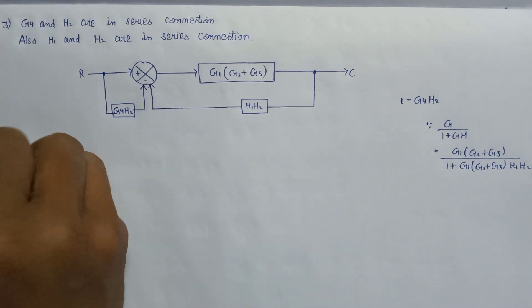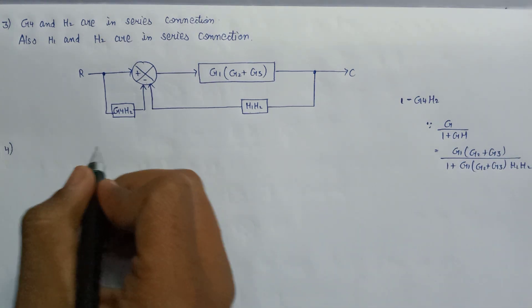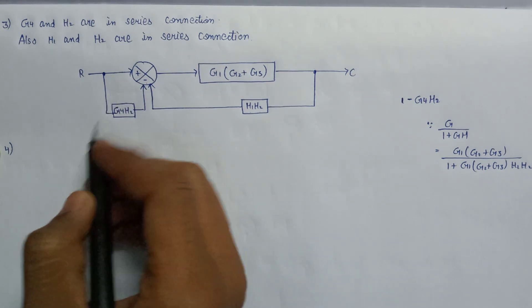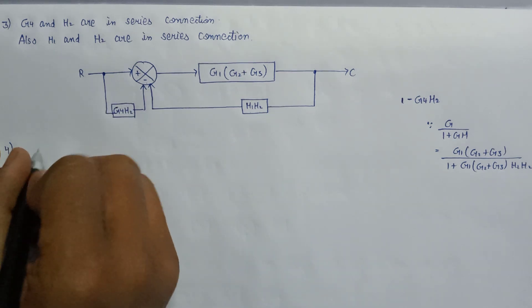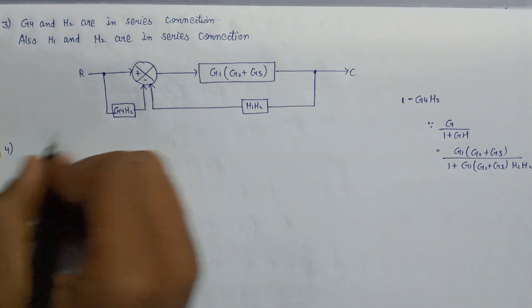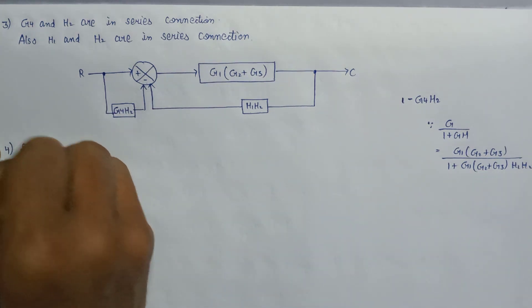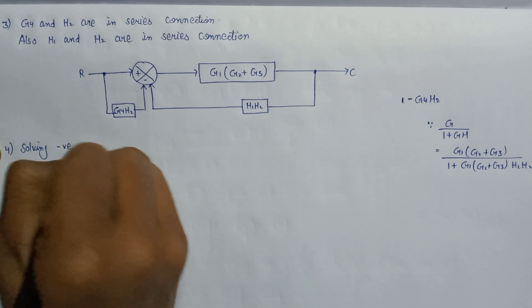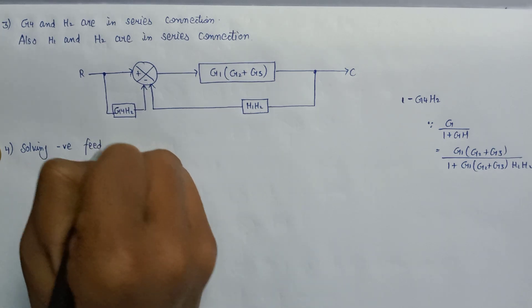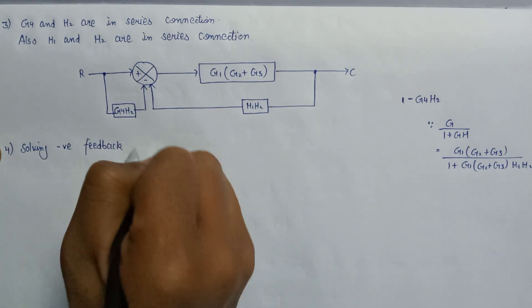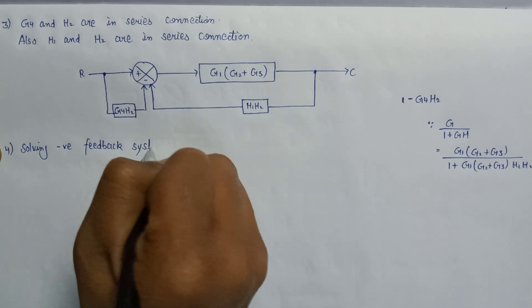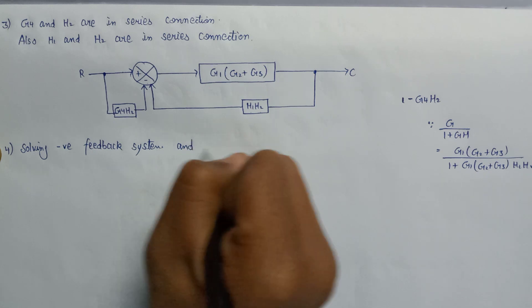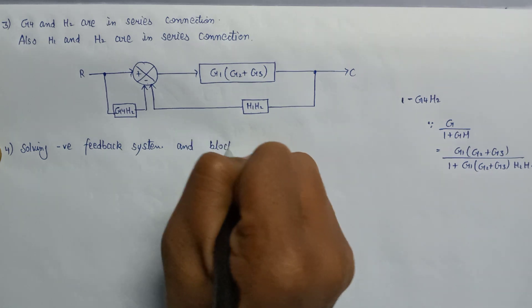Now in step number 4, we have to solve the block again — the blocks connected in parallel and also the feedback system — solving the negative feedback system and blocks connected in parallel.